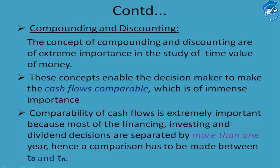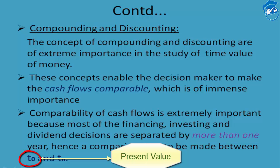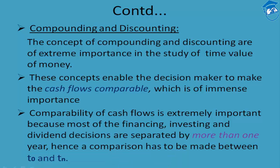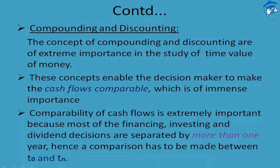When we use the word 'comparable,' we are trying to see whether the cash flows at Tn against T0 are matching up properly. T0 stands for the present value or present cash flow, while Tn refers to the time factor of n number of years — the futuristic time frame. Cash flows across two time frames should be matched against each other to see whether a particular decision is worth taking.